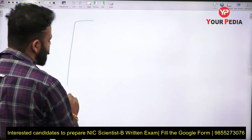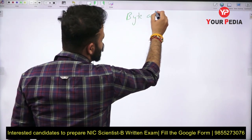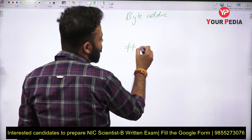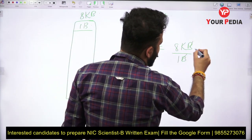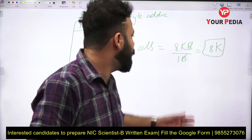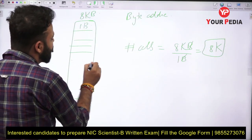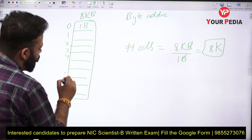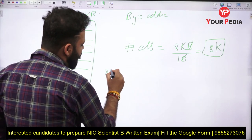Now let's expand this concept. Let's say the memory size is 8 kilobytes and the memory is byte addressable. This means one cell size is 1 byte, so the number of cells equals total memory divided by cell size, which gives 8K cells. Previously you had to search 8 cells; now you have to search 8K cells, so without a decoder the searching time would rise exponentially.